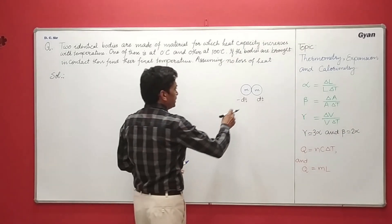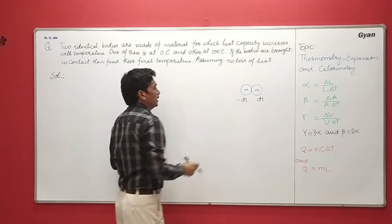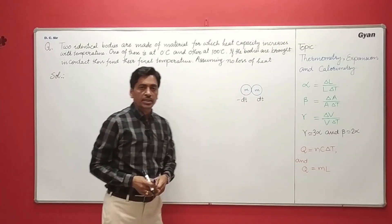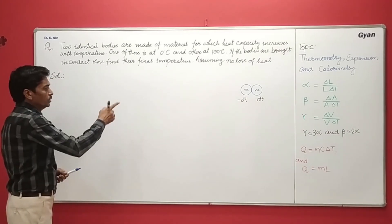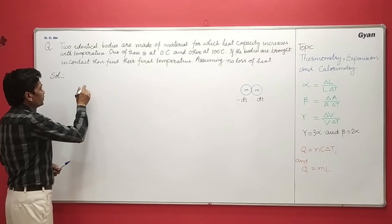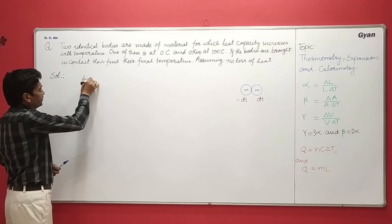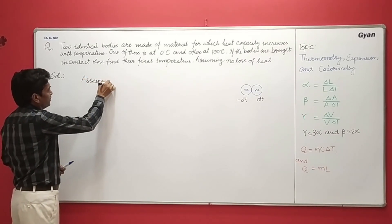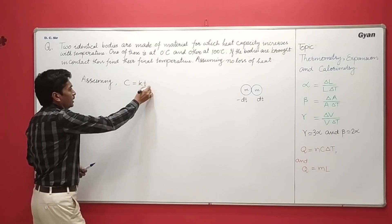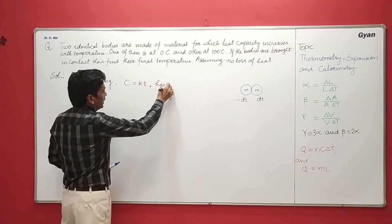Now with two identical bodies of mass M, the temperature of first decreases by DT and that of second increases by DT. So we assume C is equal to KT, where K is a constant.